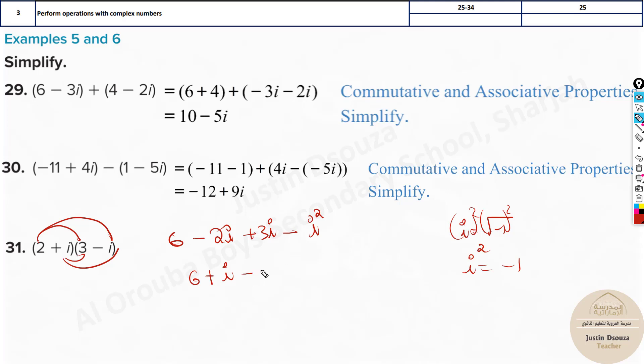Now here we have minus of minus 1. So this becomes i plus 1 and we have 6 at the left side. So add them up, it will be 7 plus i. This would be the final answer.